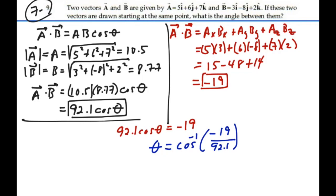If I take a negative nineteen divided by ninety-two-point-one and then take the inverse cosine, that's a negative point-two-zero-six, by the way. Inverse cosine of that gives me a hundred and one-point-nine degrees.